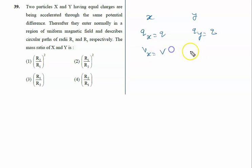The same voltage is given to both particles. Thereafter, they enter normally into a region of uniform magnetic field. When they enter normally, the path will be circular. They describe circular paths of radius r1 and r2.